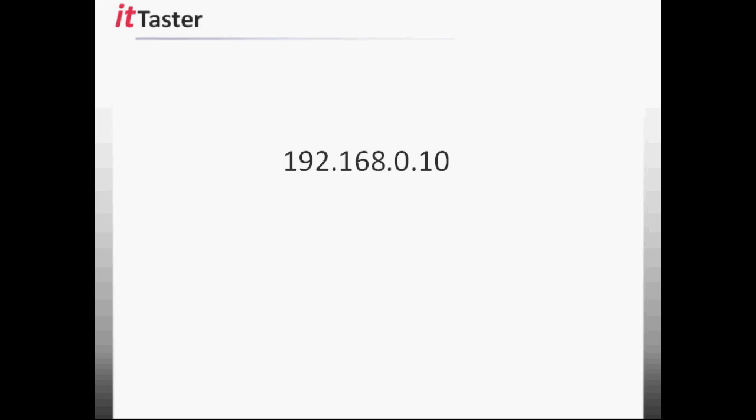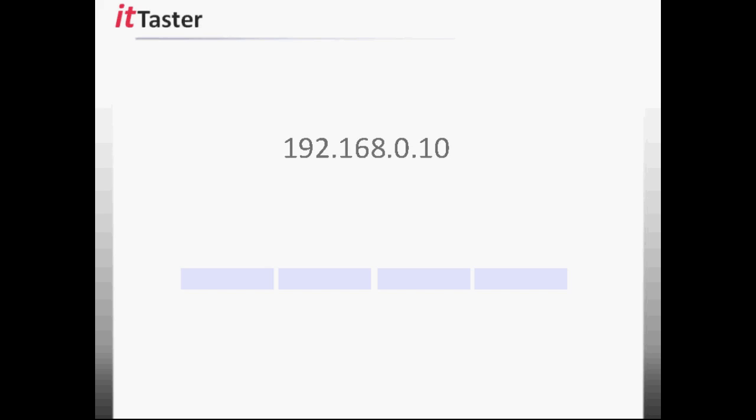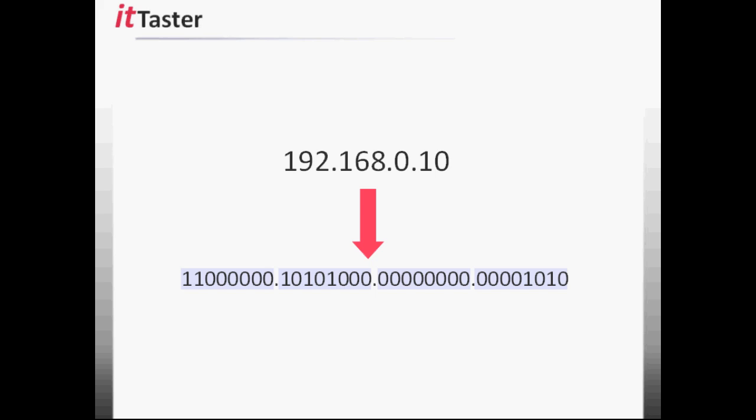Let's take a look at the example IP address of 192.168.0.10. If we were to write it down as a 32-bit binary number it would look like this. These 32 binary bits are then broken down into four 8-bit portions. Each 8-bit portion is known as an octet.